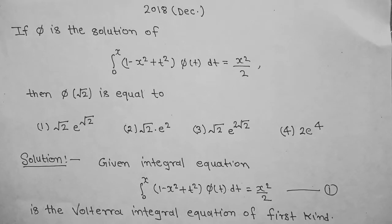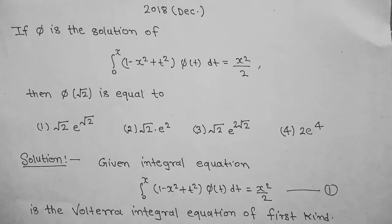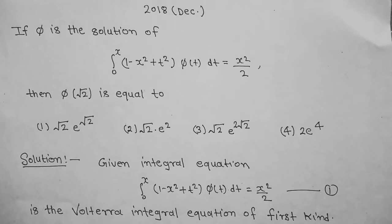CSIR NET Mathematical Science 2080 December question: If φ is the function defined by the integration from 0 to x of (1 minus x² plus t²) times φ(t) dt, which equals x²/2, then φ(√2) is equal to? Option 1: n√2·e^√2, Option 2: n√2·e², Option 3: √2·e²·e^√2, Option 4: 2·e⁴.